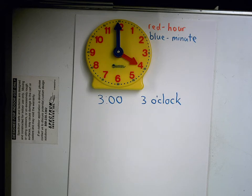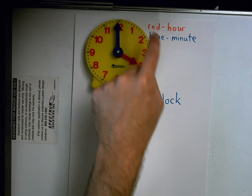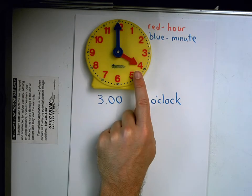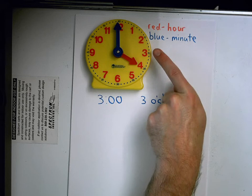Oscar. It moved to where? It moved to the four. It went from the three to the four. In 60 minutes, which we know is an hour, that hour hand moved one space from three to four.